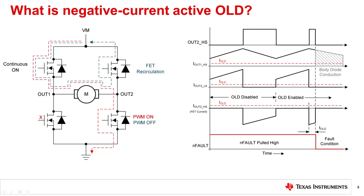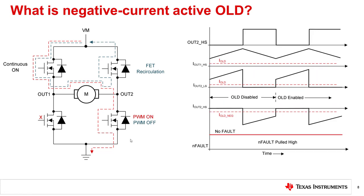The body diode of the high side FET conducts to complete the current recirculation back to the supply. This false detection of OLD is eliminated by enabling the negative current OLD mode for the OUT2 high side FET. This graph shows the negative current OLD threshold, IOLD_neg, instead of IOLD enabled for the OUT2 high side FET. During the second PWM cycle, the nFAULT pin remains latched high and the OUT2 channel is not disabled when OLD is enabled. Negative current OLD will also work during recirculation through the low side FETs.